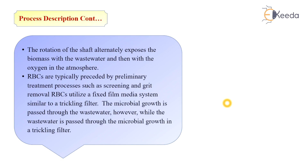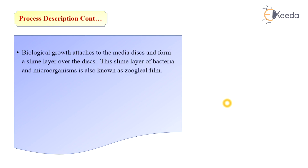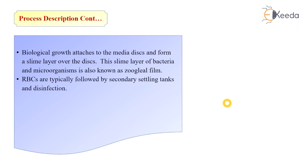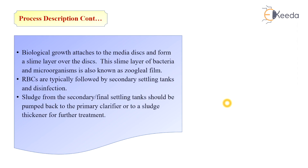The biological growth attaches to the media disc and forms a slime layer over the disc, similar to a trickling filter. This slime layer of bacteria and microorganisms is also known as zoogloeal film. The rotation of the shaft alternately exposes the biomass to the wastewater and then to oxygen in the atmosphere. RBCs are typically preceded by preliminary treatment such as screening and grit removal, and followed by a secondary settling tank and disinfection. Sludge from the secondary settling tank should be pumped back to the primary clarifier or to a sludge thickener for further treatment.